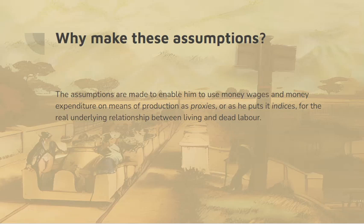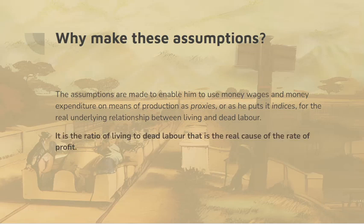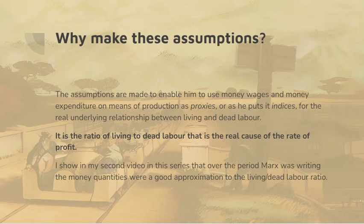These proxies stand for the real underlying relationship between living and dead labour, which is the causal factor — it's the ratio of living to dead labour that is the real cause of the rate of profit. The monetary quantities are just the phenomenal form in which this becomes apparent to the capitalist accountant. The second video in this series will show that over the period Marx was writing about, these money quantities were, in fact, a good approximation for the living-to-dead labour ratio.